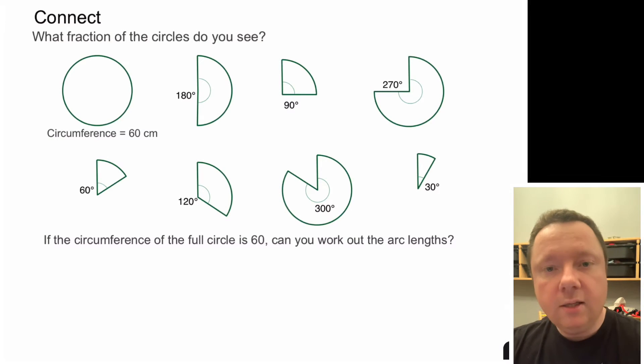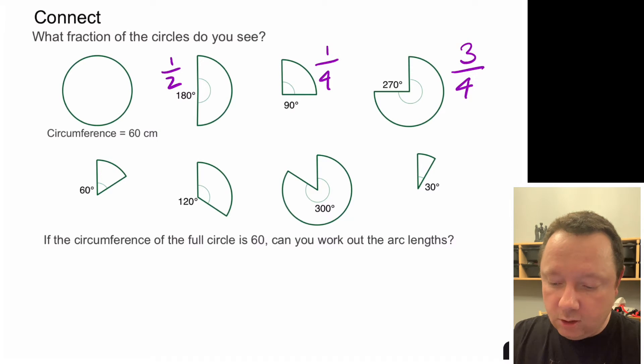So let's start connecting this up with angles. This is the same circle again but this time we've cut it so here you should be able to see that we've got a half of a circle, 180 degrees. This one here you should be able to see that's a quarter of a circle, 90 degrees. For the next one you should be able to see that you've got three quarters of a circle.